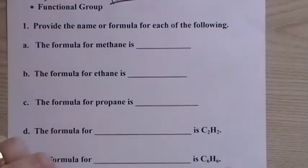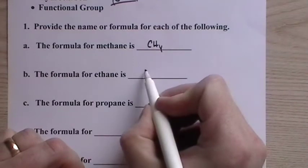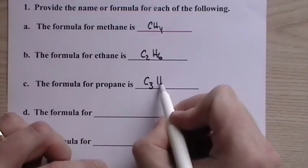Let's take a look. The formula for methane is CH4, and then the formula for ethane is C2H6, and the formula for propane is C3H8.